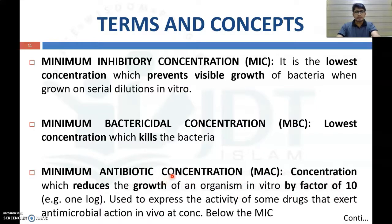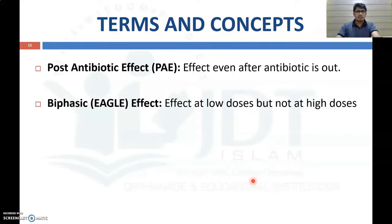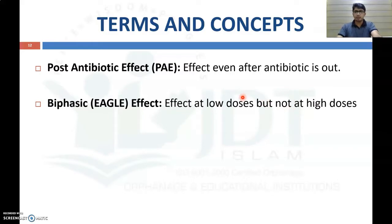Minimum antibiotic concentration is the concentration that will reduce the growth of microorganisms in vitro by a factor of 10. This term is used to express the activity of drugs that exert antimicrobial action in vivo at concentrations below their MIC. Other terms used in chemotherapy include post-antibiotic effect — the effect of a drug even after the antibiotic is out of the body — and biphasic or Eagle effect, which is the effect active at low dose but not at high dose. Unlike most drugs, some drugs are active only at low concentrations, not at high concentrations.